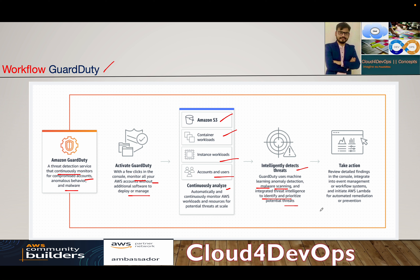It will take a snapshot and generate findings. You can then review the detailed findings in the console and integrate into an event management or workflow system — that could be a SIEM tool or AWS Security Hub for a consolidated dashboard. From there you can take action and initiate an AWS Lambda function for auto-remediation or prevention. Up to this point, GuardDuty is acting as an IDS — detecting threats and providing details — but with Lambda you can make it both IDS and IPS.